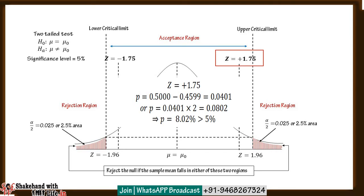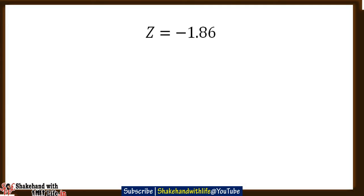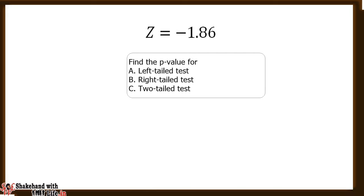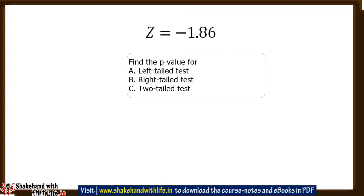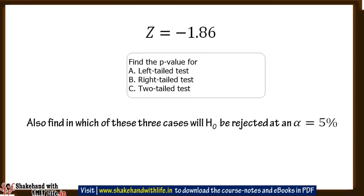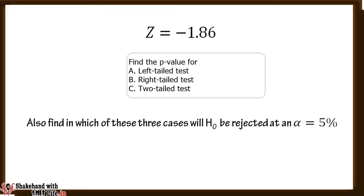At an alpha of 5%, the null hypothesis will be accepted because the p-value of 8.02% is greater than 5%. Now do this exercise by yourself: if the test statistic comes as Z = −1.86, find the p-value for a hypothesis test in case of a left-tail test, right-tail test, and two-tail test. Also find in which of these three cases H0 will be rejected at an alpha of 5%. Write your answer in the comment box below.